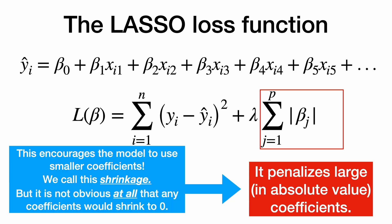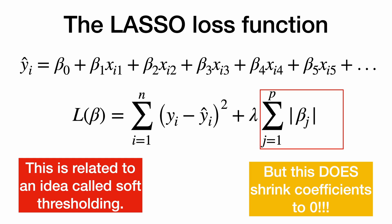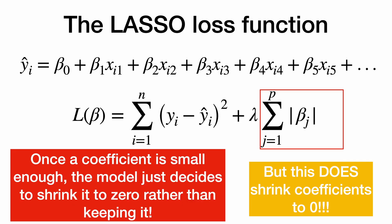But it is not obvious at all that any coefficients would shrink to zero. But this does shrink the coefficients to zero. This is related to an idea called soft thresholding. Once a coefficient is small enough, the model just decides to shrink it to zero rather than keeping it.